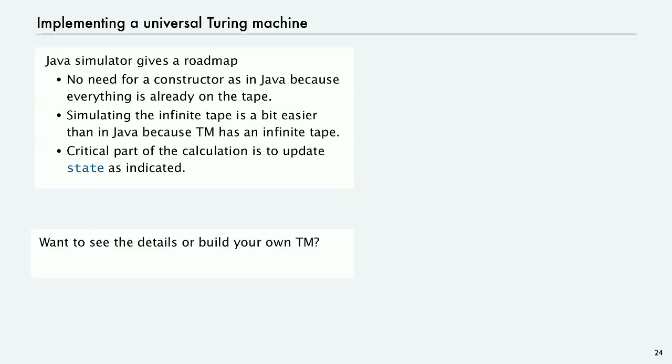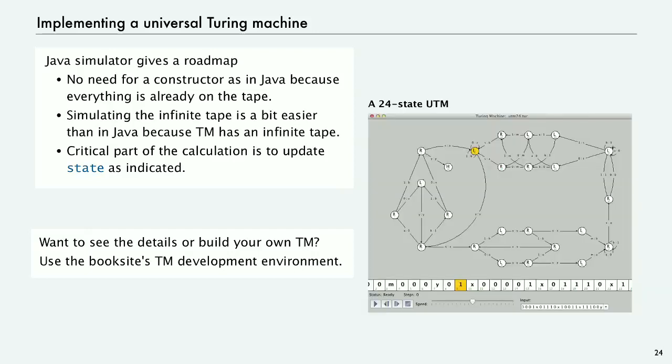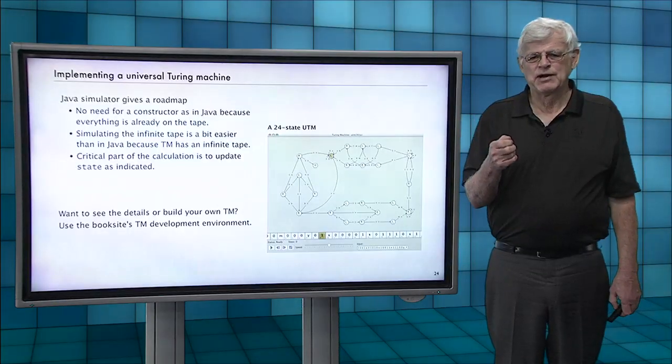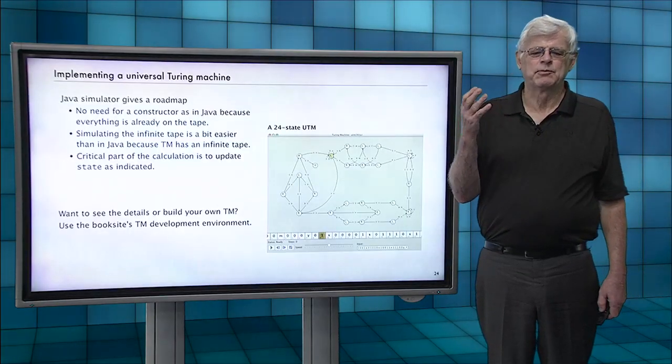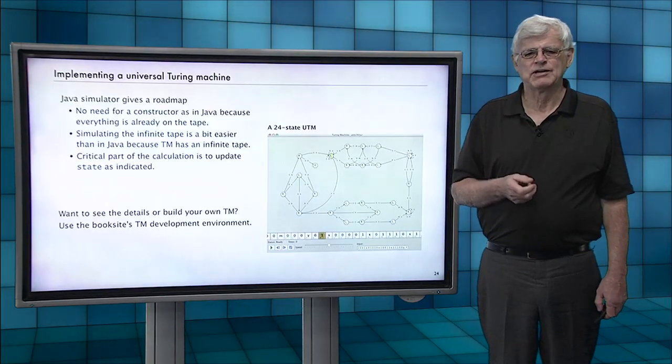So if you want to see the details or build your own Turing machine for any computational task, this is something that there's lots of resources for. In fact, we have a whole Turing machine development environment on the book site. And one of the things that's there is a 24 state universal Turing machine that you can go ahead and study and run on our decrementer or any other Turing machine that you want. Simulates the operation of any Turing machine if you put the input in that Turing machine on the tape.